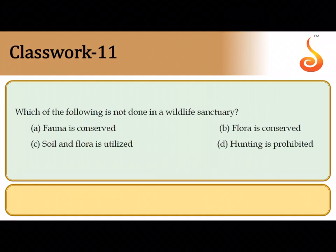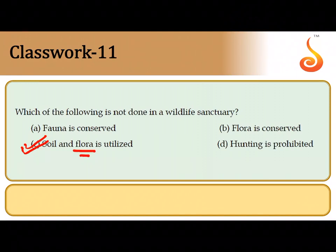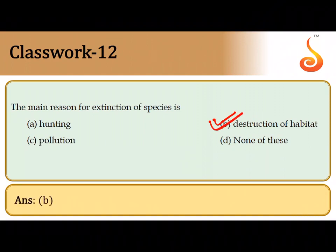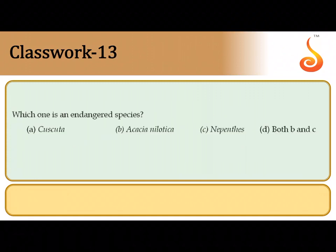The eleventh question asks what is not done in a wildlife sanctuary. You would not utilize the soil and flora there because it would affect the plants growing and is not meant for economic benefit — it is exclusively meant for conservation. So soil and flora utilization is not done in a wildlife sanctuary — correct answer is option C. The twelfth question asks the main reason for species extinction: the major cause is habitat loss and fragmentation, option B.